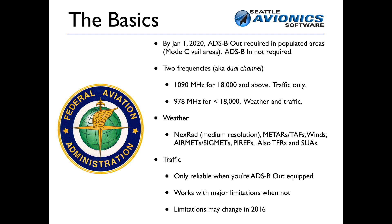Traffic is what ADS-B is really designed for. The whole point of ADS-B is to allow aircraft to land closer together, to fly more tightly in airspace, by knowing more precisely where each and every plane in the system is. Ironically, though, the traffic information that you receive is only reliable when your plane also has ADS-B out.